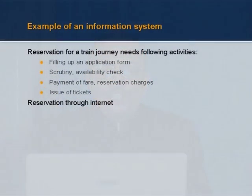Transaction systems are the most crucial since all other systems look at the same basic data that enters through transactions. The transaction systems need not be online — they could be batch as used to happen once upon a time — but today with modern computing you have online transaction processing. A reservation for a train journey, for example, requires filling an application form, scrutiny, checking availability, payment of fare, reservation charges, and issue of tickets. You could do a reservation through the internet today, paying by credit card and printing a ticket at home — all together comprising a transaction.